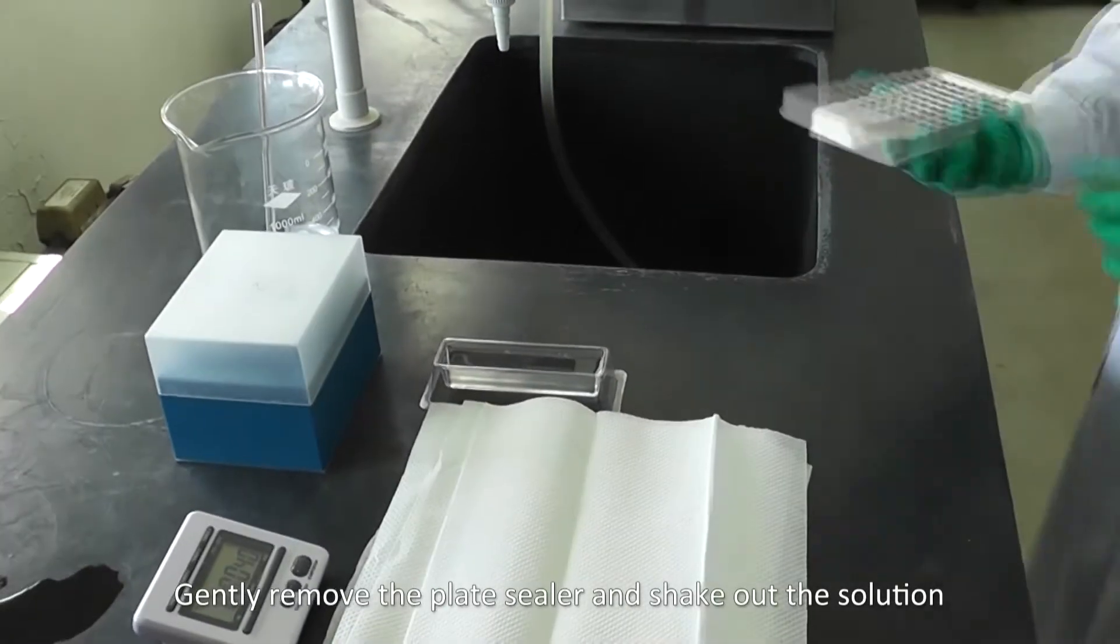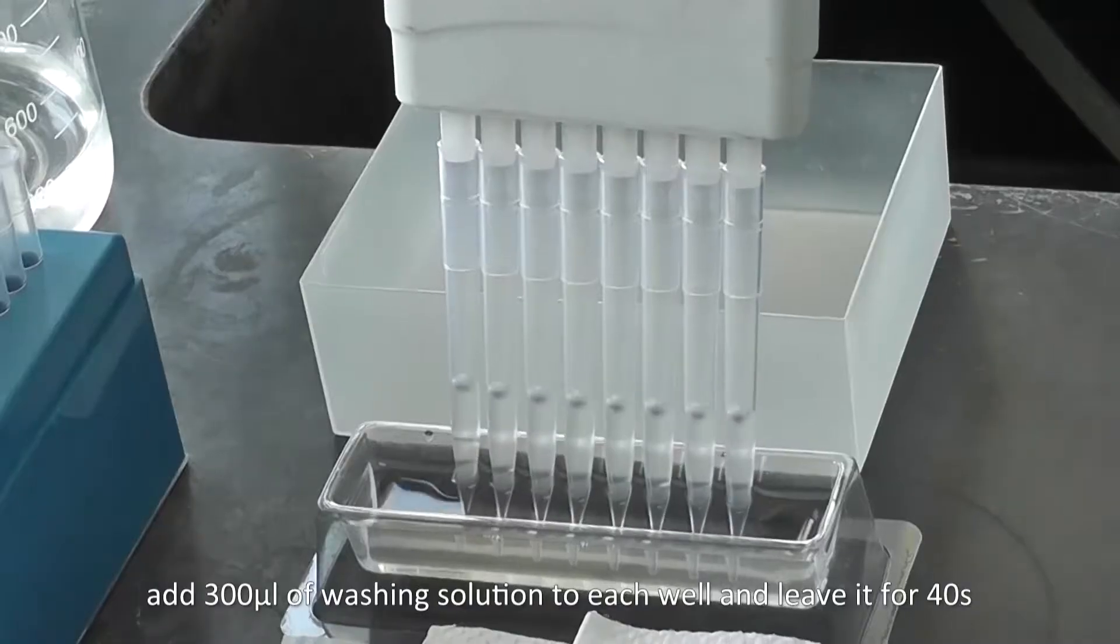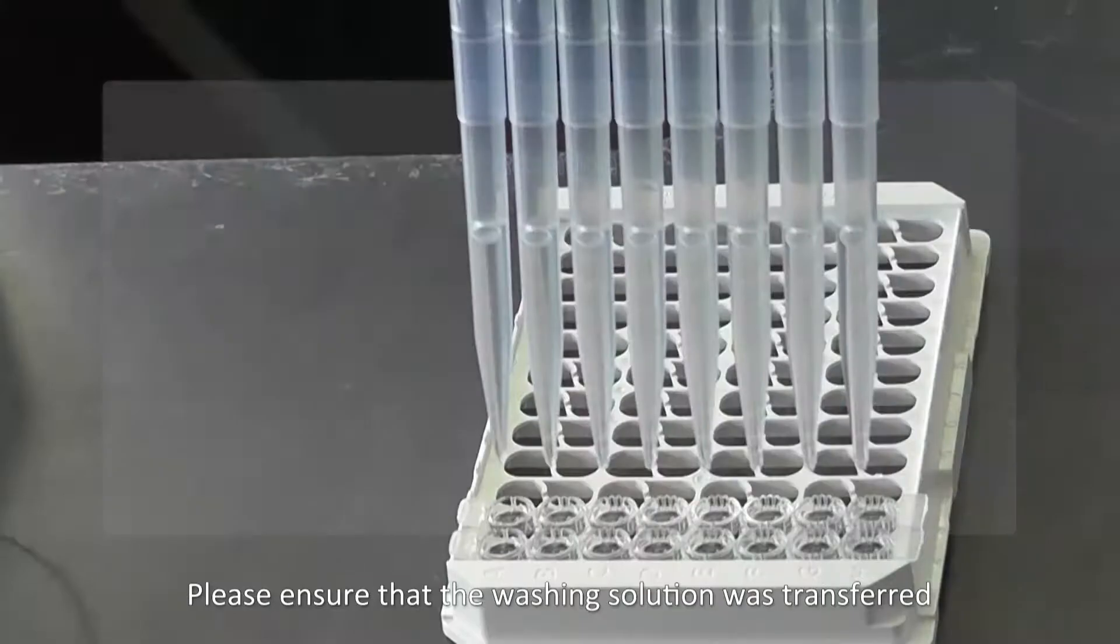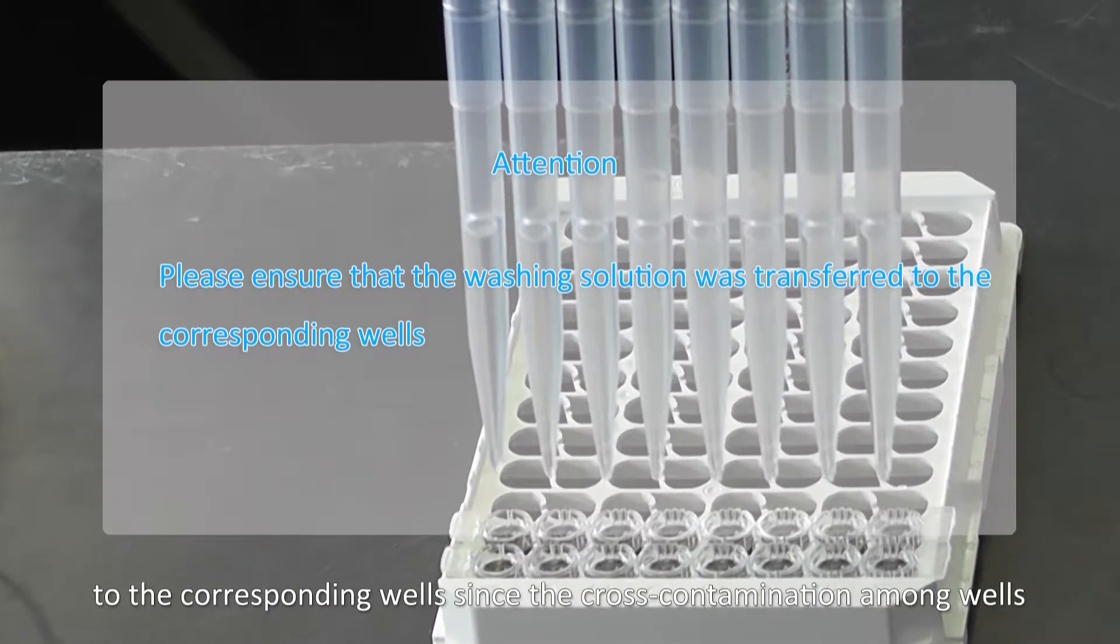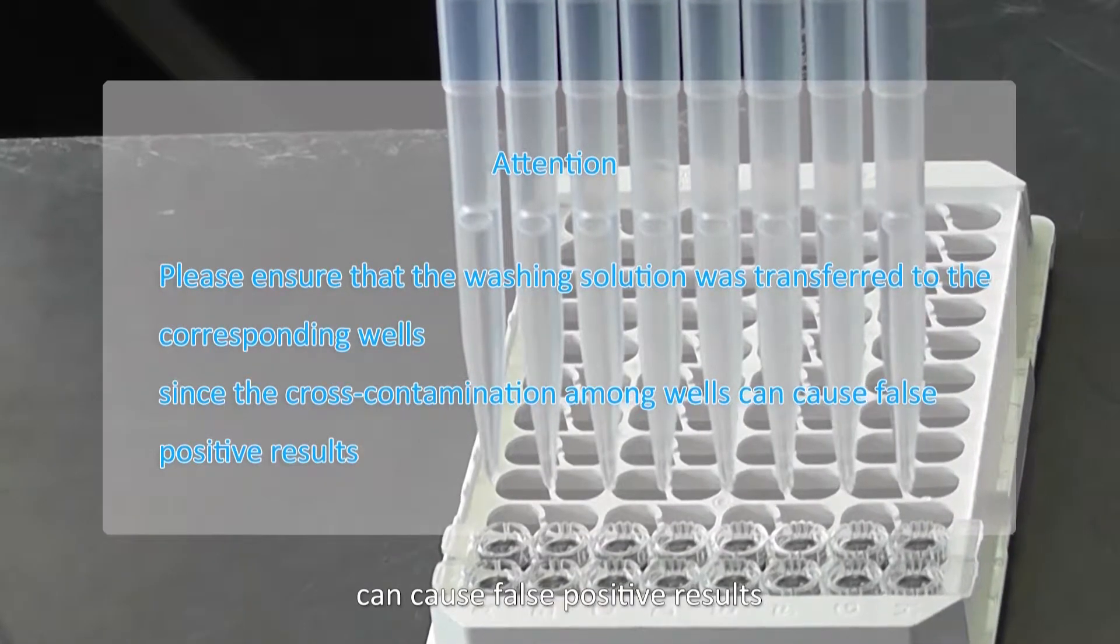Gently remove the plate sealer and shake out the solution. Add 300 microliters of washing solution to each well and leave it for 40 seconds. Please ensure that the washing solution was transferred to the corresponding wells, since cross-contamination among wells can cause false positive results.